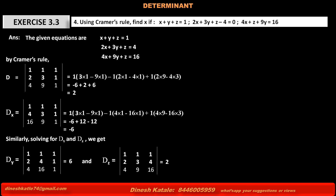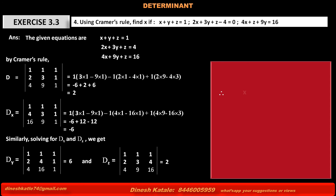Hence, we have: D equals 2, Dx equals minus 6, Dy equals 6, and Dz equals 2. Using these values to find the variables: x equals Dx upon D equals minus 6 upon 2, which equals minus 3.